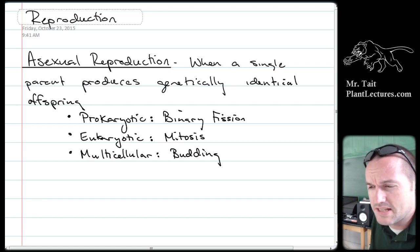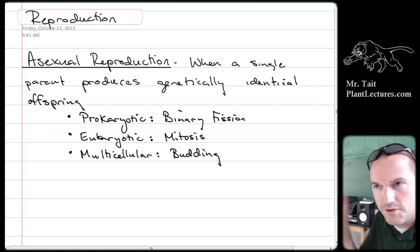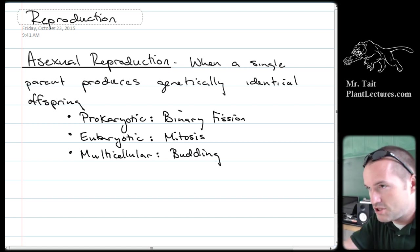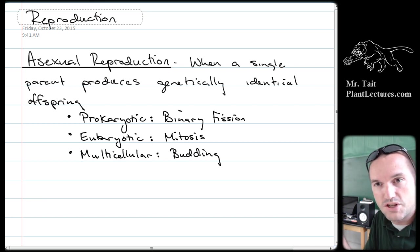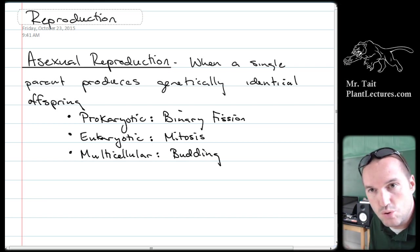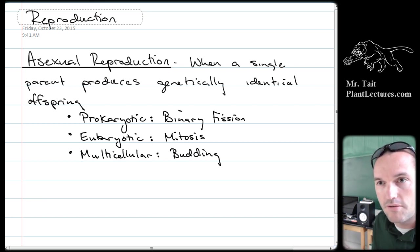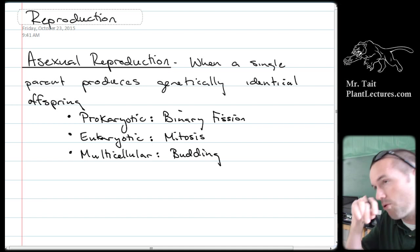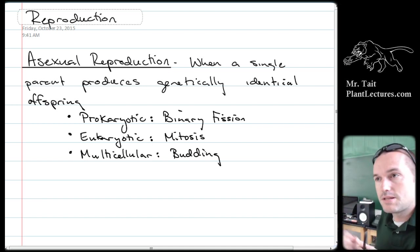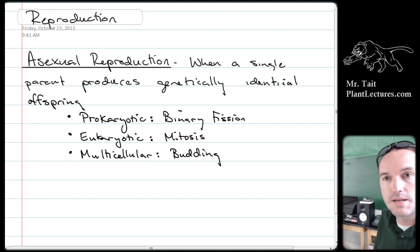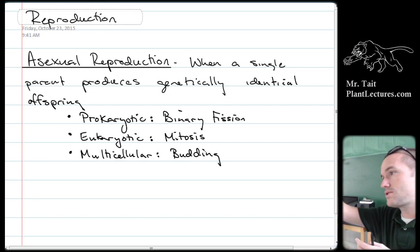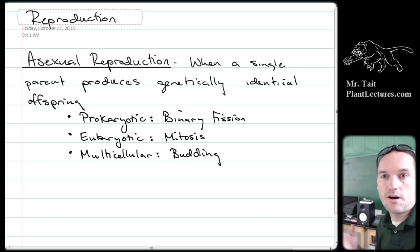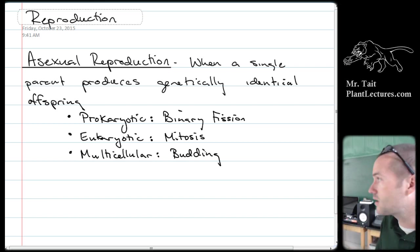Examples of budding include starfish — if you cut a starfish just right, it will regenerate into two separate starfish. Corals also do it; their main method of reproduction is budding off new parts that become separate organisms, to the point where you could sever them off and they would be totally unique.